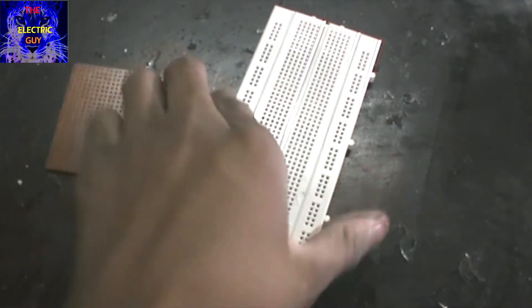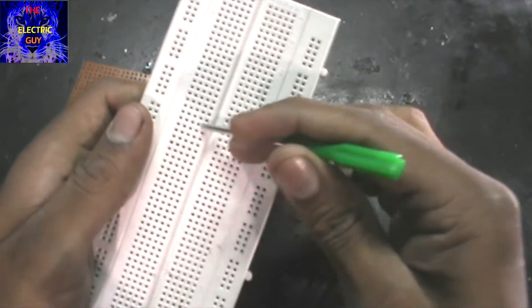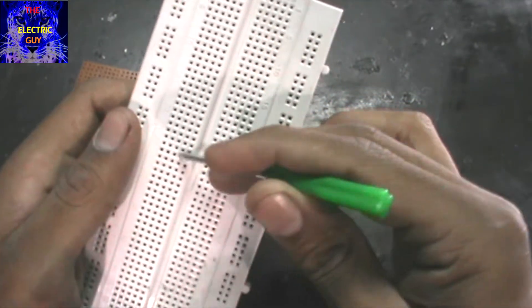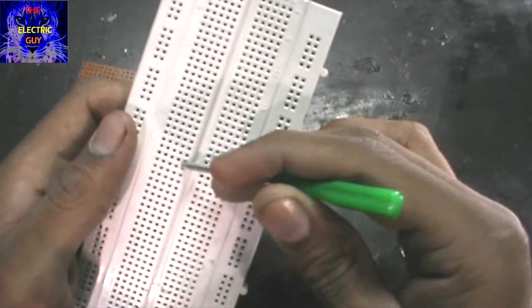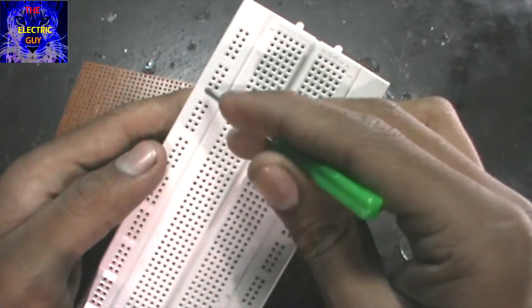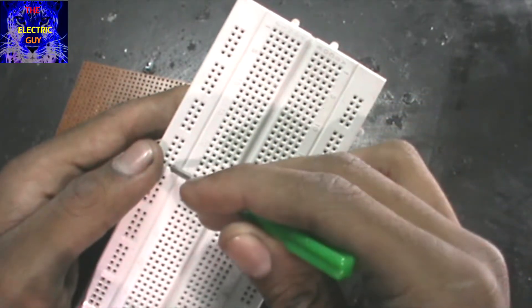Let's first talk about the breadboard. In a breadboard, these horizontal rails are connected to each other, and in this type of rail, the vertical rails are connected to each other.